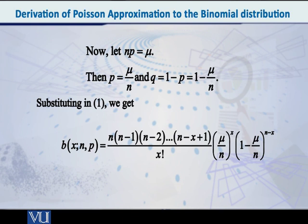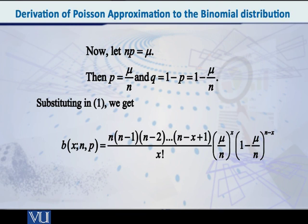Probability of x equals n into n minus 1 into n minus 2 and so on into n minus x plus 1, divided by x factorial, multiplied by mu by n whole raised to x — since p raised to x was there, in place of p we write mu by n. And multiplied by 1 minus mu by n whole raised to n minus x, since in place of q we write 1 minus mu by n.